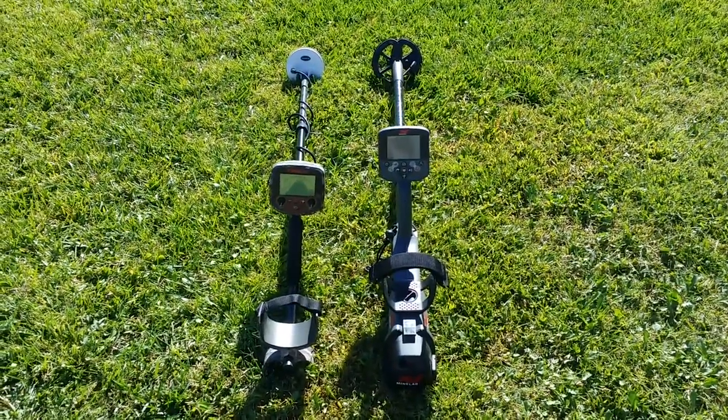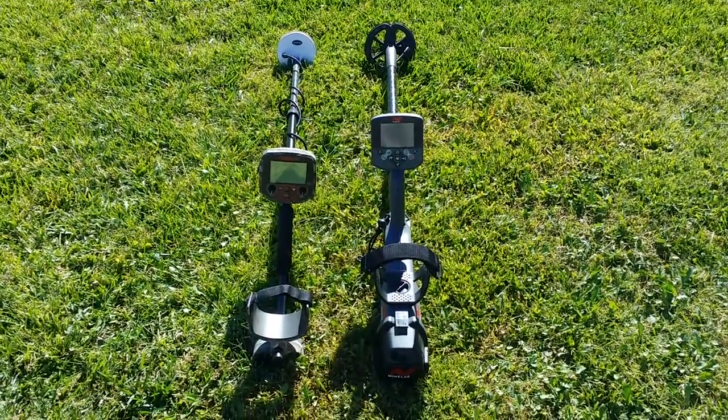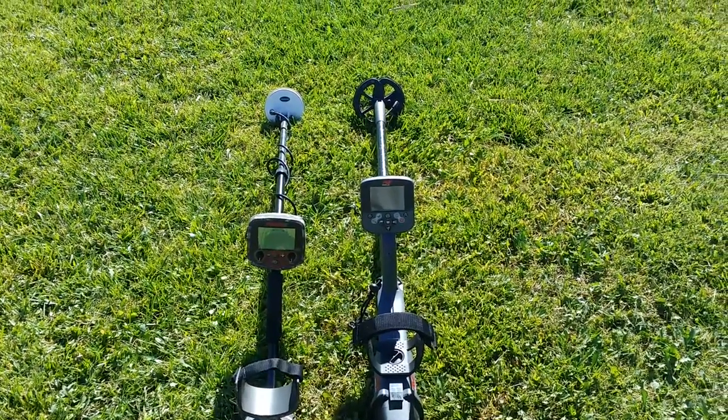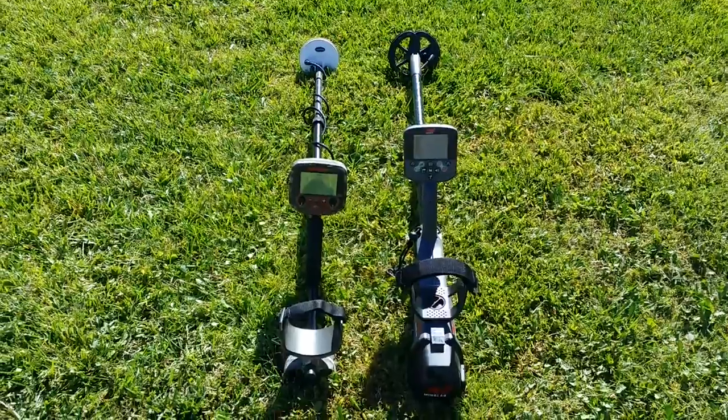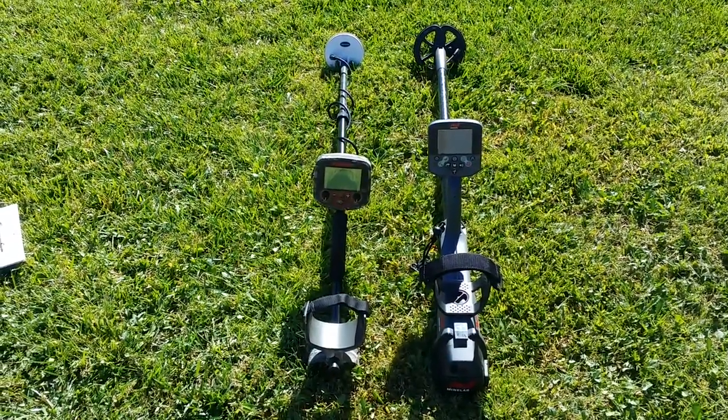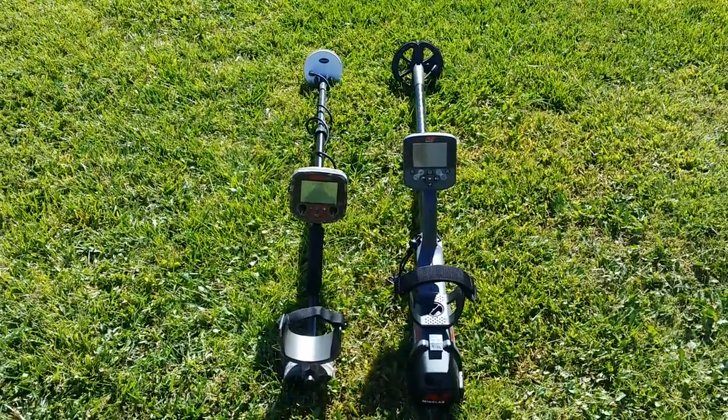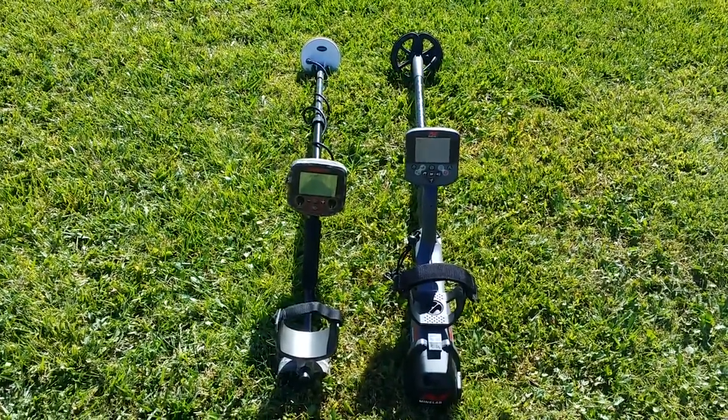Okay, this is a quick video to show the difference between the Minelab CTX 3030 with a 6-inch double D coil and the Fisher F19 with a 5-inch double D coil. Just the difference in performance on a nail board test.